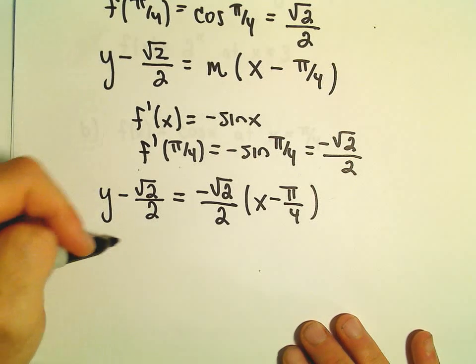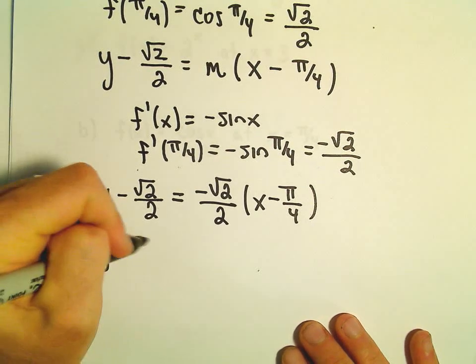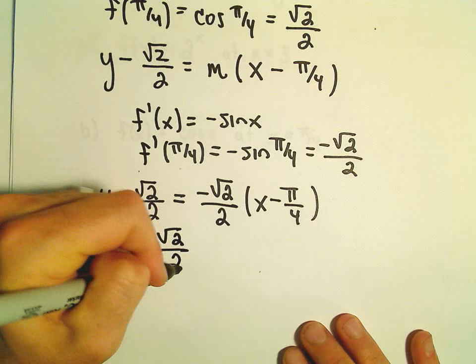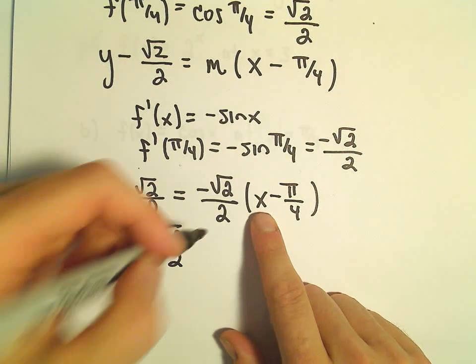Now I'm just going to multiply things out and get y by itself. If we distribute, we'll have -√2/2 times x.